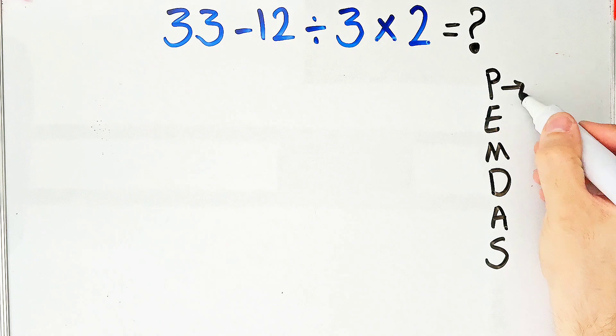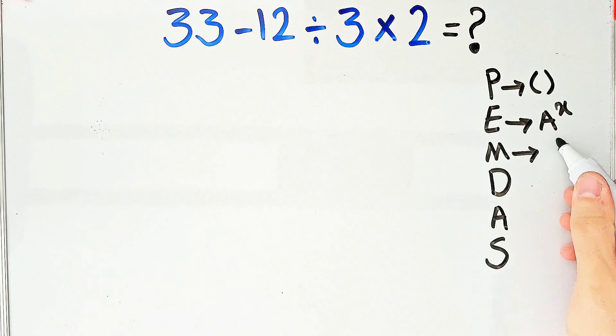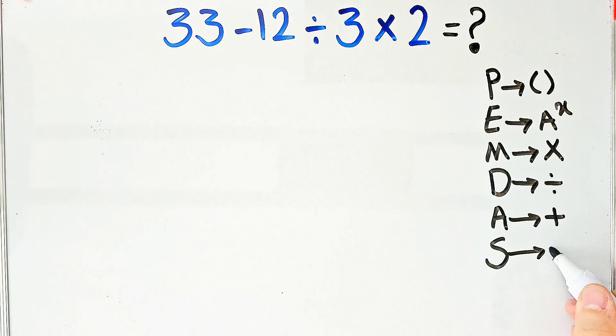In this rule, P stands for parentheses, E stands for exponent, M stands for multiplication, D stands for division, A stands for addition, and S stands for subtraction.